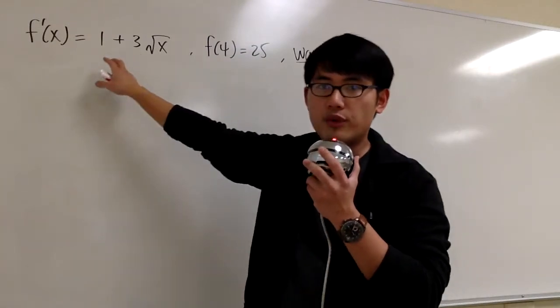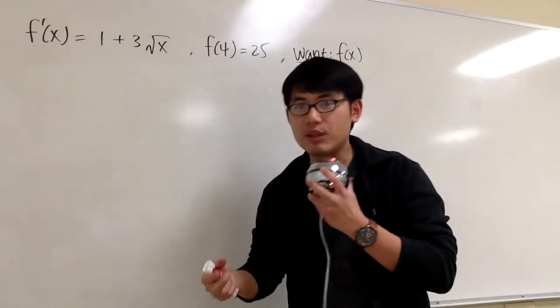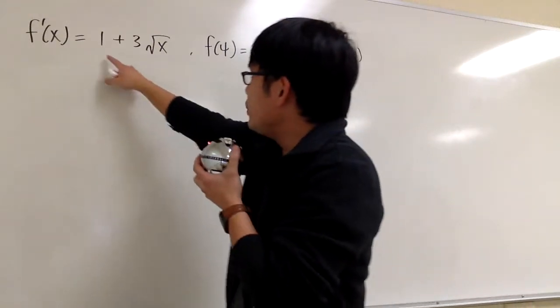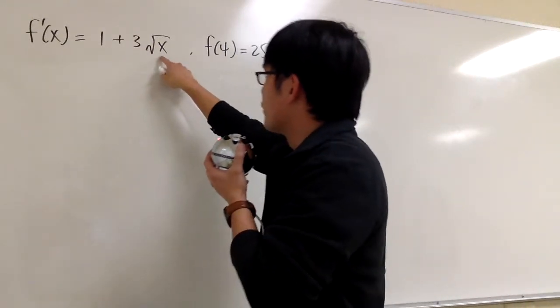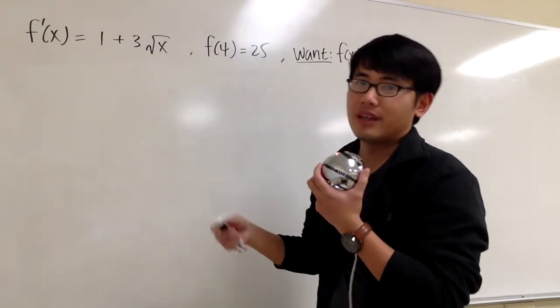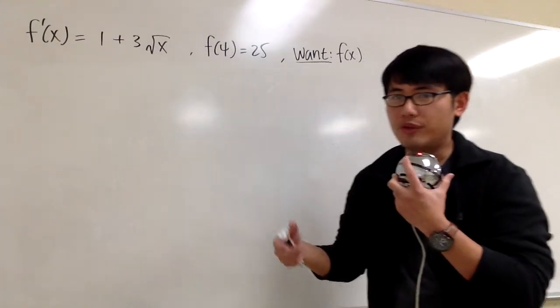Because we're given a derivative, we have to do the anti-derivative so that we can get the original. But then here we have 1 plus 3 square root of x. We should look at the square root of x as x to the 1/2 power. That way, we can use the reverse power rule.